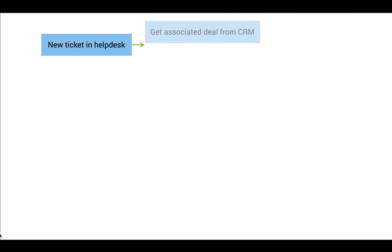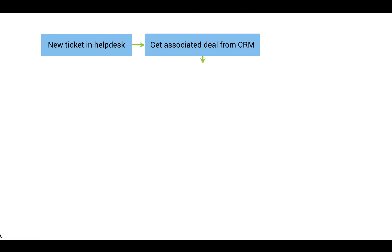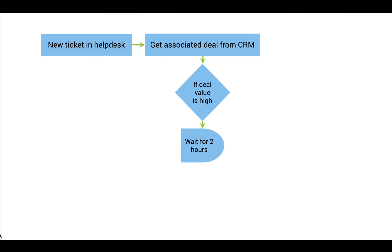In this video, we will be looking at two different Flow Control elements: Decision and Delay. Let's begin by discussing the case we want to solve. Every time a new ticket is created in Help Desk, we want to fetch the corresponding deal associated with the contact in CRM. If the deal value is high and the ticket is still unattended after two hours, we want to alert the team so they can look into the issue immediately.